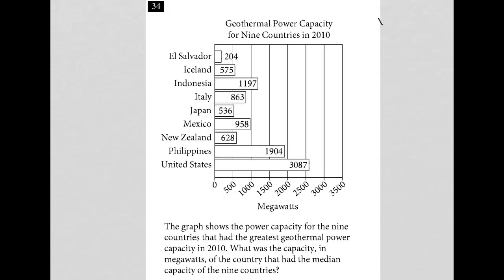This question is a diagram question. We have some visual information here. The title says 'Geothermal Power Capacity for Nine Countries in 2010.' The x-axis is megawatts and the y-axis represents the countries themselves. The question states that the graph shows the power capacity for the nine countries that have the greatest geothermal power capacity in 2010.